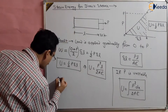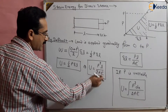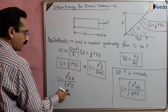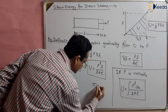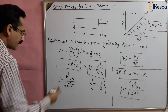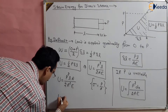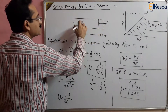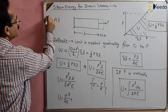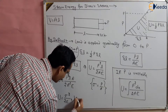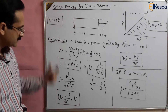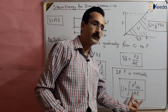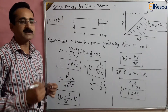We can further simplify: multiplying and dividing by area A, we write P squared L upon A squared times A upon 2E. Since P upon A is stress sigma, we get U = sigma squared upon 2E, multiplied by area times length, which is the volume of the bar. So the strain energy stored is sigma squared upon 2E times volume. In summary: U = half P delta L, or P squared L upon 2AE, or sigma squared upon 2E times volume, and for variable load, the integral of P squared dx upon 2AE.